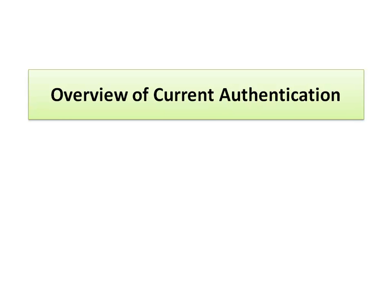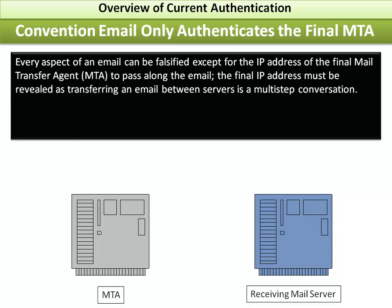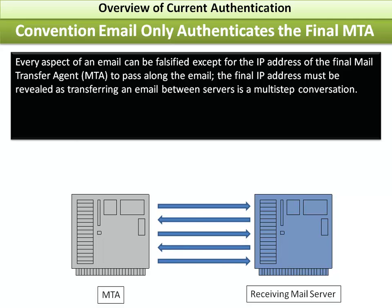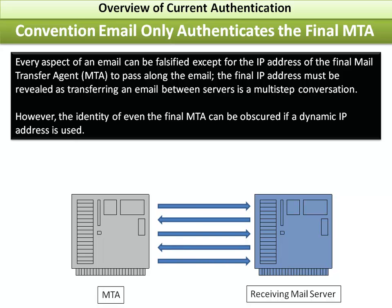This is an overview of current authentication. Every aspect of an email can be falsified except for the IP address of the final mail transfer agent or server to pass along the email. This final IP address must be revealed, as transferring an email between servers is a multi-step conversation. However, even the identity of this final mail transfer agent can be obscured if a dynamic IP address is used.